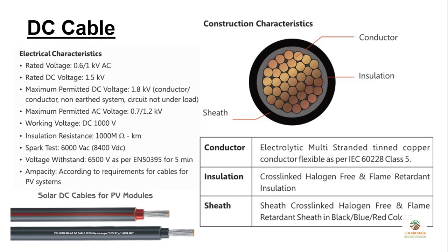These cables are generally used in solar applications. There is crosslinked, halogen-free, and flame-retardant insulation and sheath. You can see the electrical characteristics showing the rated voltage and rated DC voltage, which is 1.5 kV. The working DC voltage is 1000 V, so it is recommended that your system voltage should not exceed 1000 V.